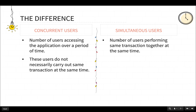Simultaneous users are those who are carrying out the same transaction together at the same time. For example, all 10, 15, or 100 users perform the search operation at the same time — those are the simultaneous users.